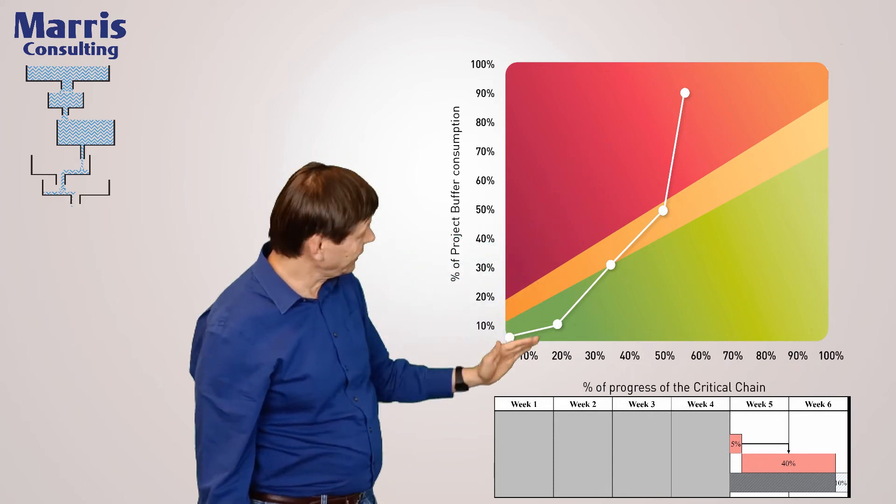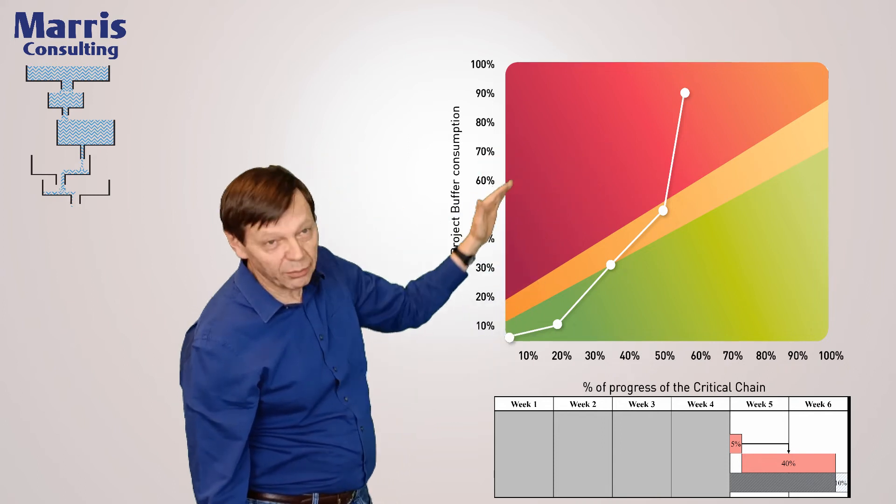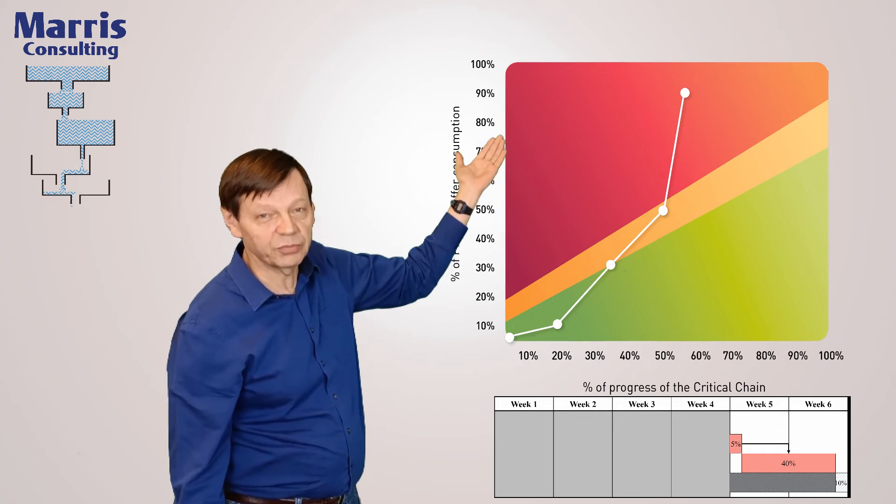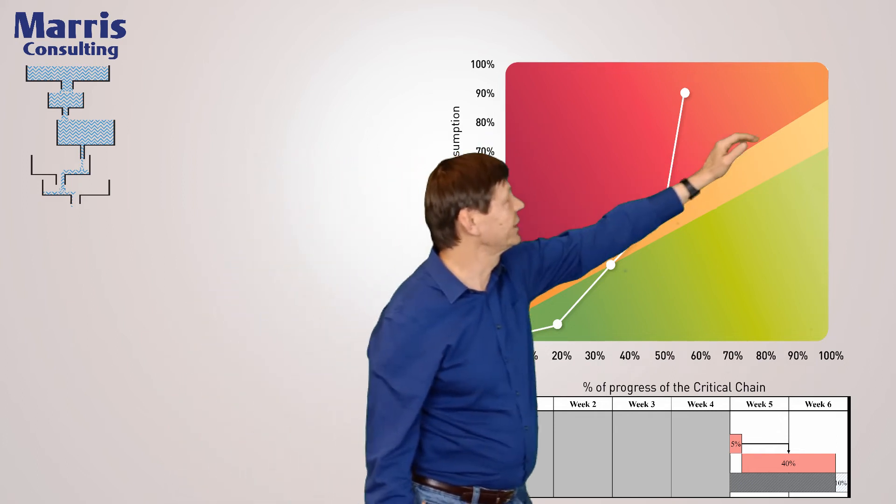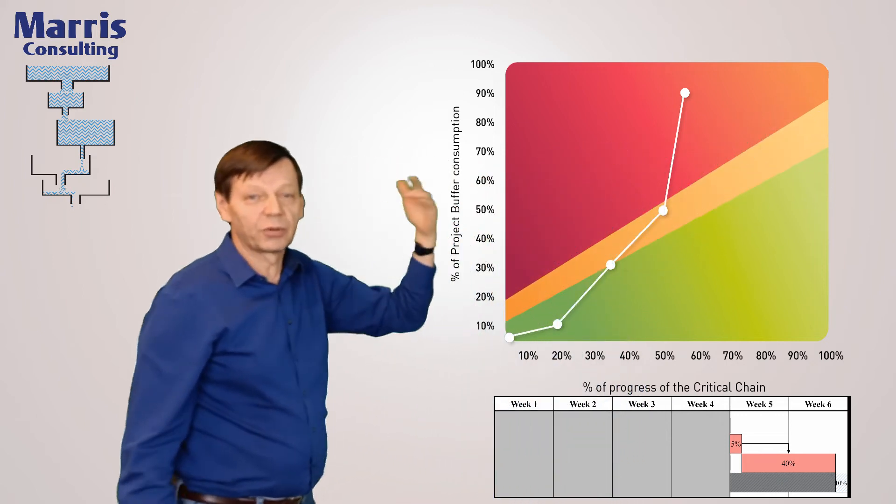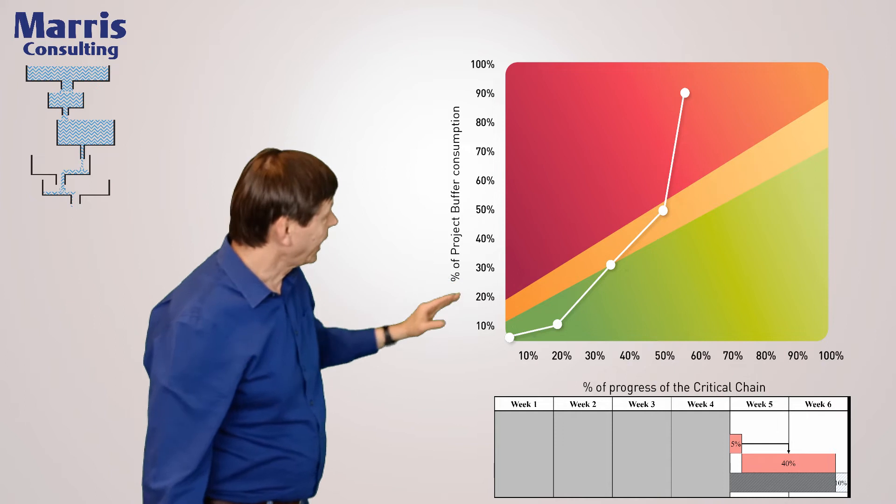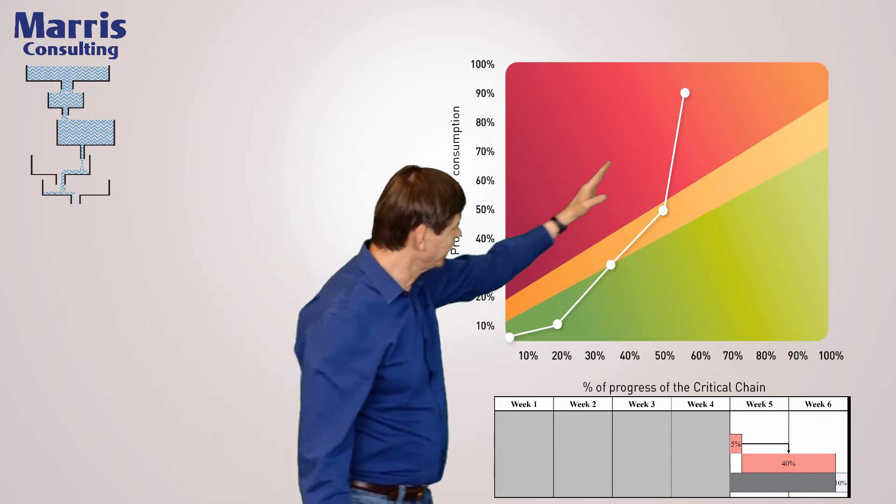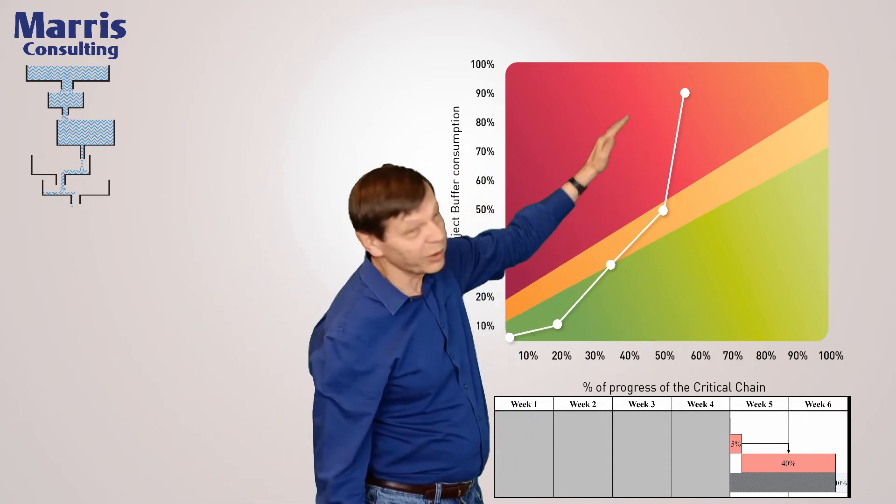If we carry on like that, we're going to end up late. Because where is the date we promised? The date we promised is up here, it's on the top right hand corner. That's what we promised to top management or to the client. And when on that week four we're over here, if we carry on like that we're going to end up late.